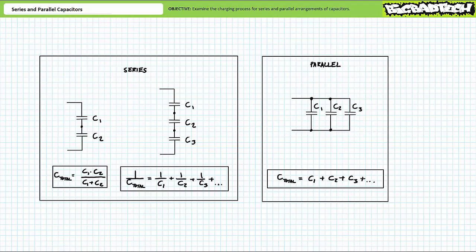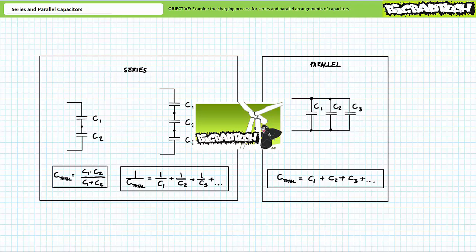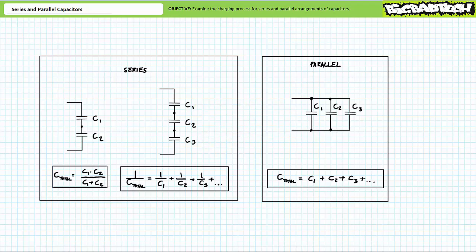My objective is to examine the details of the charge process for series and parallel arrangements of capacitors. As you recall from the capacitors lecture, available at the Big Bad Tech channel, we learned to calculate the total capacitance of series and parallel arrangements of capacitors. The process was easy enough if you could remember this simple rule: do the opposite you would do if calculating resistors in series and parallel.